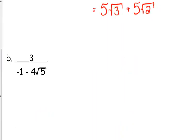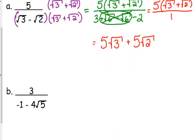Let's look at rationalizing 3 over negative 1 minus 4 square root of 5. So the conjugate is negative 1 plus 4 square root of 5. Again, the first term does not change signs. It's only the sign in between.